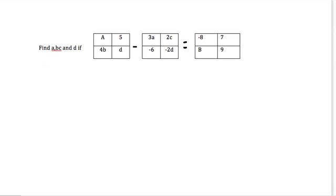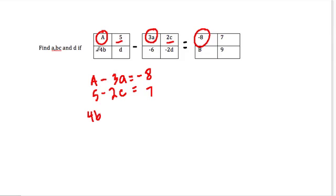Now we're dealing with subtraction with matrices. And really, all we need to do is highlight the corresponding parts. So we have finding A, B, C, D, if this matrix minus this one equals this one. So A minus 3A is negative 8, and we want to keep track of these. A minus 3A is equal to negative 8. And then keep going. 5 minus 2C equals 7. 4B minus negative 6 equals B. And then D minus negative 2D equals 9.